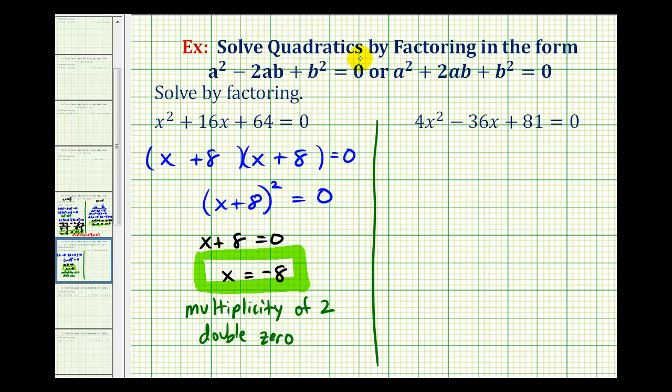Again I don't like to memorize these, so what I would recommend is seeing that this will factor into two binomial factors. For the factors of 4x², we would try 2x and 2x, and then for the factors of 81 we would try 9 and 9.